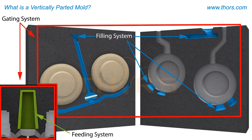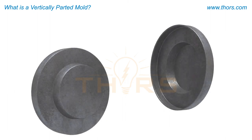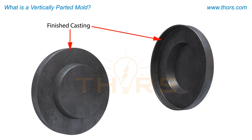Additional features may include the core, vents, and filter. All of these parts contribute to how molten metal travels through a mold to produce a sound, quality casting.